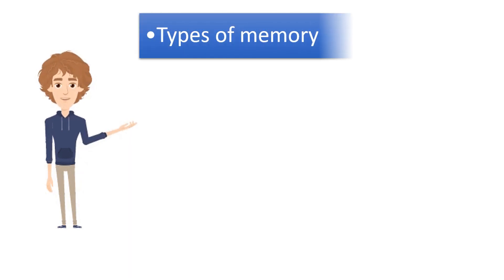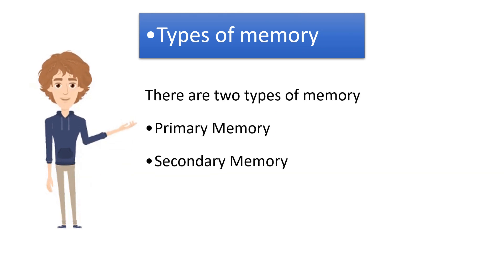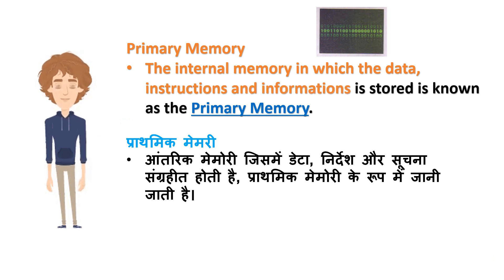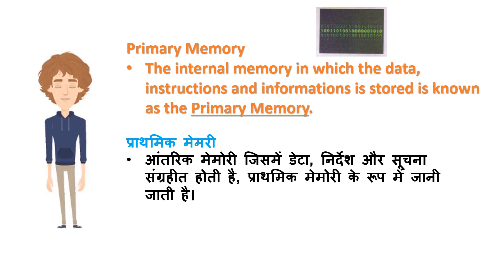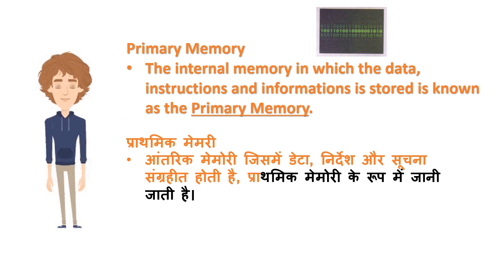Types of memory: There are two types of memory — Primary memory and Secondary memory. Primary memory: The internal memory in which the data, instructions and information is stored is known as the primary memory. Prathmik memory: Aantarik memory jis mein data, nirdesh aur suchna sangrahit hoti hai, prathmik memory ke roope mein jani jati hai.